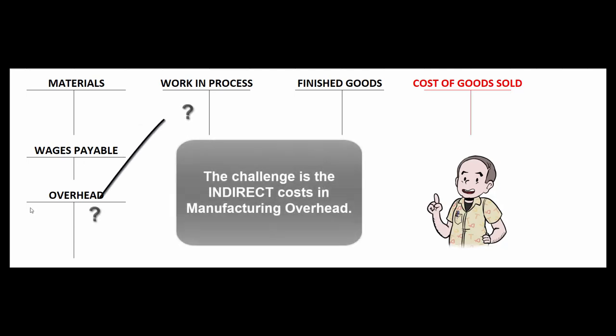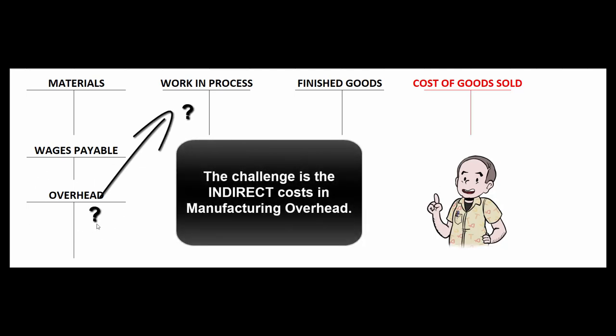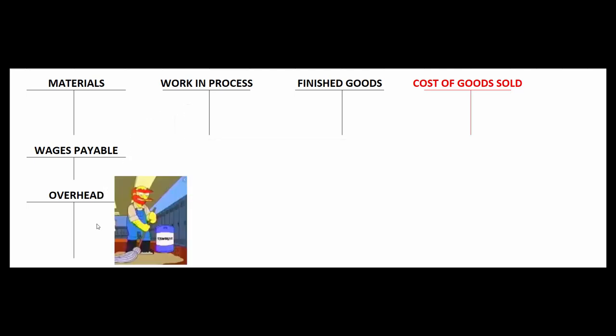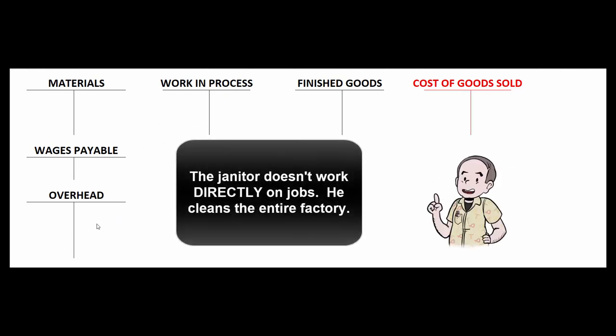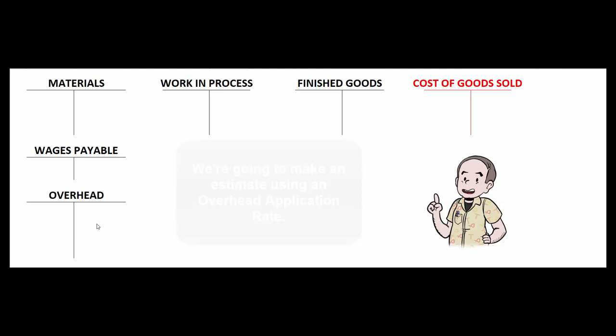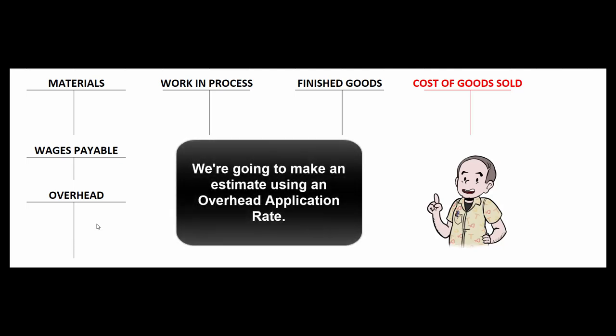The problem is manufacturing overhead — indirect costs. For example, think of janitorial service: the janitor doesn't work on a particular job, he just sweeps up the entire factory. So how much of his wages or health benefits get applied to each job? There's no way to tell, so we're going to make up an overhead application rate to estimate it.